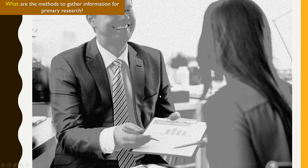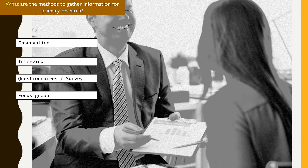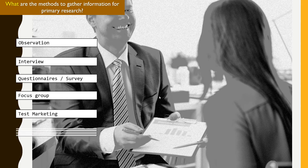Now let's look at what the methods of primary research are. There are a few here as you can see: observation, interview, questionnaires or survey, focus groups, test marketing, and loyalty cards and databases. These are various ways to gather information through primary research, which means to gather firsthand information.